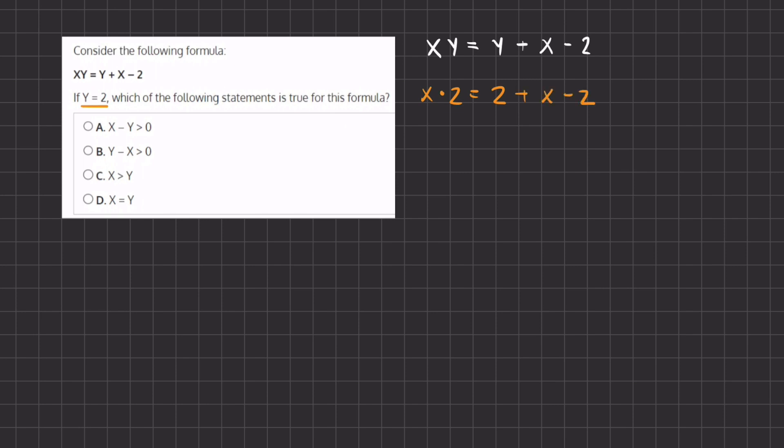So now let's start simplifying. We have x times 2 which is 2x equals 2 and negative 2 which these two cancel out and we are left with 1x here.